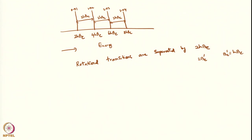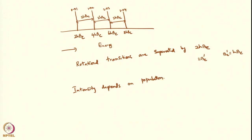When you have such a rotational spectrum, you might think it would have lines of equal intensity, but unfortunately the rotational spectrum looks slightly different because the intensity of each transition also depends on the population of rotational states. Rotational states have a degeneracy of 2j + 1, so the j = 0 state is non-degenerate, j = 1 has degeneracy 3, and so on.